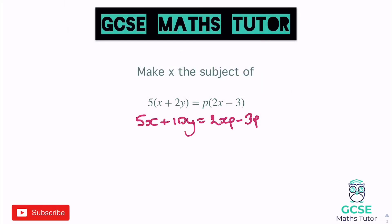So where are our x pieces? We have the 5x and the 2xp. I've noticed that minus 3p, so I'm going to add 3p to both sides, and this time I'm going to put my x's on the right-hand side. We could move it the other way, but we're just going to avoid having these negative symbols everywhere. So plus 3p on both sides, and that gives us 5x plus 10y plus 3p equals 2xp.